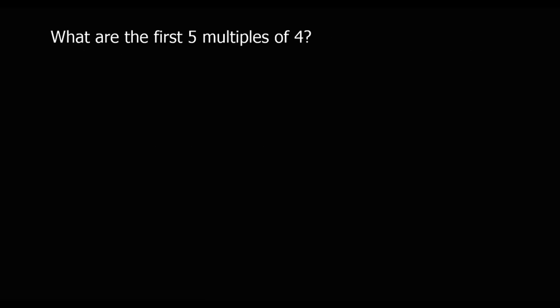Pause the video and try to get the first 5 multiples of 4. So the multiples of 4 are the 4 times table: 1 times 4 makes 4, 2 fours are 8, 3 fours are 12, 4 fours are 16, and 5 fours are 20. So those are the first 5 multiples of 4.